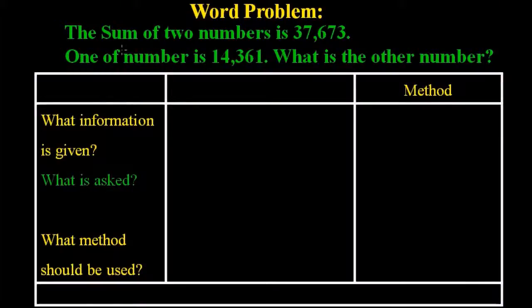The problem is the sum of two numbers is 37,673. One of the numbers is 14,361. What is the other number?